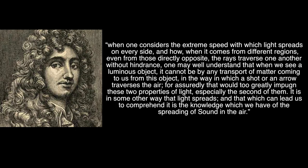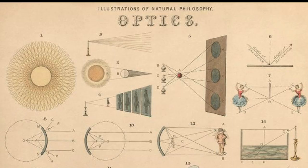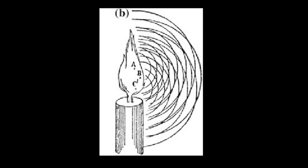Huygens explains that when one considers the extreme speed with which light spreads on every side, and how, when it comes from different regions, even from those directly opposite, the rays traverse one another without hindrance — one may well understand that when we see a luminous object, it cannot be transport of matter coming to us from this object, in the way in which a shot or an arrow traverses the air. It is in some other way that light spreads, and that which can lead us to comprehend it is the knowledge of the spreading of sound in the air. Huygens' idea was that light was always described by rays going from the source to the observer, and it was never really thought of like a wave, as sound was.